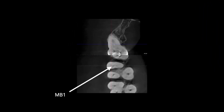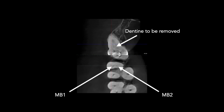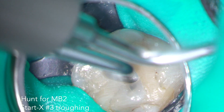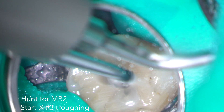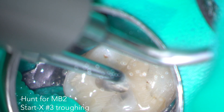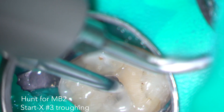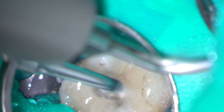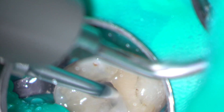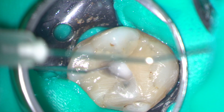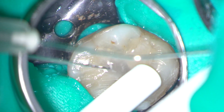It's now time to hunt for that MB2 canal. I know from the CBCT that the orifices are going to be quite close together and covered with a little bit of dentine. I'm using a StarTex 3 ultrasonic tip to trough along the isthmus between the MB1 and MB2. The primary irrigant is warmed 3% sodium hypochlorite.